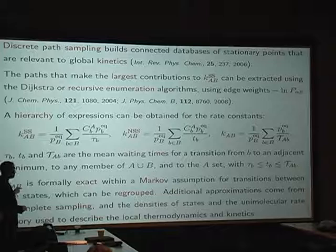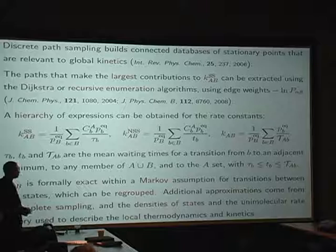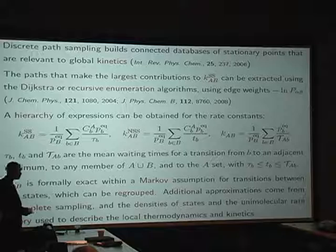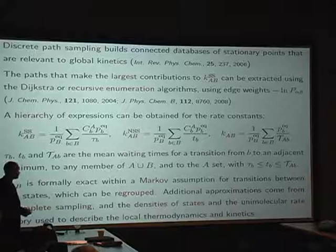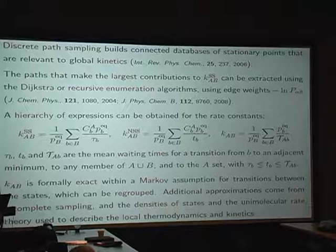Of course, there are other approximations systematically, like incomplete sampling. You never know. How can you know what you haven't found? You can't. You can just run it for twice as long and see if it changes. I'm using generally harmonic densities of states because it's quick and convenient and at low temperature accurate. But you don't have to. They could be quantum. They could be anharmonic. I'm using unimolecular rate theory, usually transition state theory, for each of the local minimum-to-minimum rate constants.